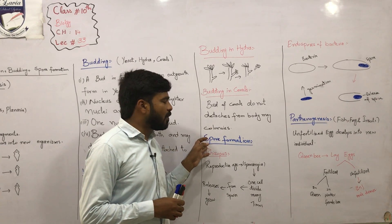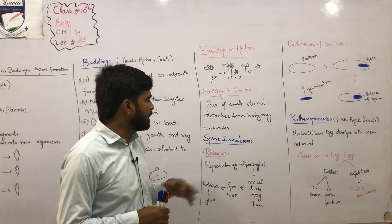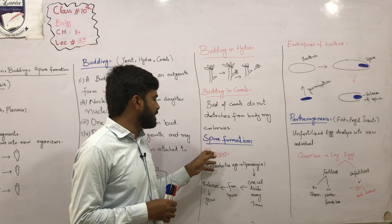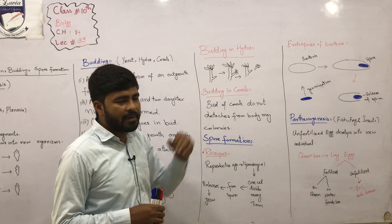Now we have spore formations. Spore formations are two analogies. One is a fungi, which is a rhizopus, and the other is a bacteria.